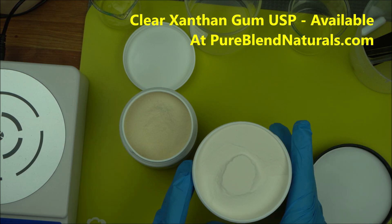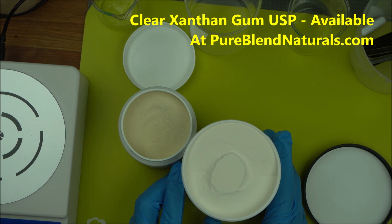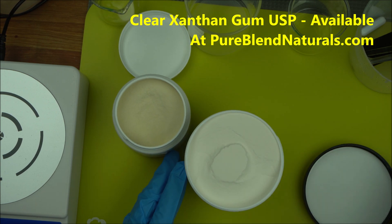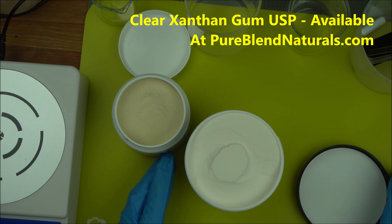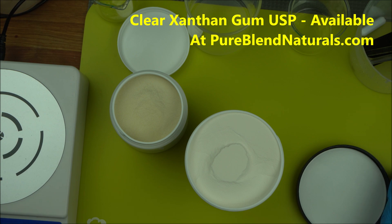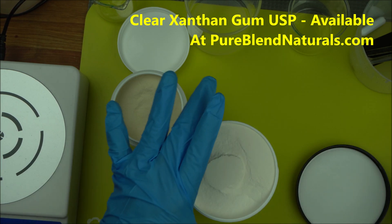This is called clear xanthan gum USP. It's available right now at pureblendnaturals.com. I keep telling you, if you want to buy cosmetic grade ingredients certified by chemists, make sure you use pureblendnaturals.com. If you're in the UK, US, or Canada, you can order from pureblendnaturals.